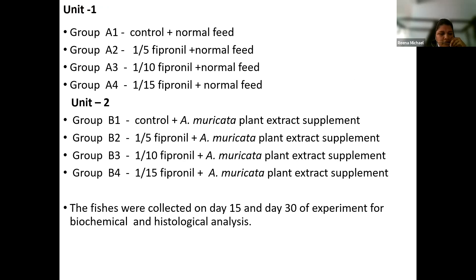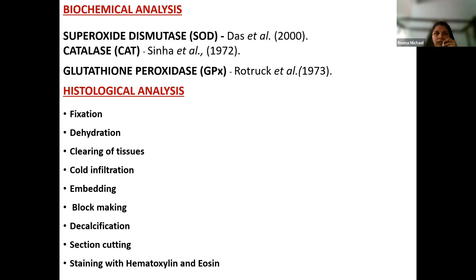Coming to the experimental setup: Fishes were grouped into two units — a control and those exposed to three sublethal concentrations of fipronil, with Unit 1 fed with normal feed and Unit 2 fed with Annona muricata plant extract supplement. Fishes were collected on Day 15 and Day 30 for biochemical and histological analysis. Superoxide dismutase was estimated by the Das et al. method, catalase by the method of Sinha et al., and GPX by the method of Rotruck et al. For histological analysis, dissected kidneys and gills were processed through fixation, dehydration, clearing, infiltration, embedding, block making, decalcification, section cutting, and staining with hematoxylin and eosin.